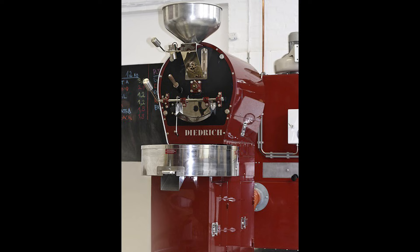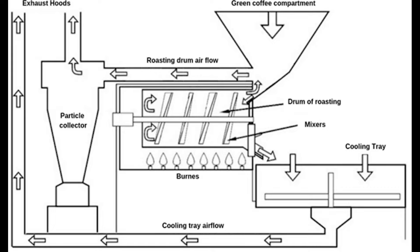There are several different types of coffee roasters available on the market, each with their own unique characteristics and advantages. Some of the most common types include drum roasters, which are the most traditional type and use a rotating drum to evenly roast the beans. They typically have a large capacity and can handle large batches of coffee.